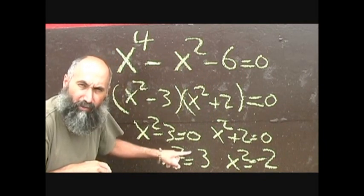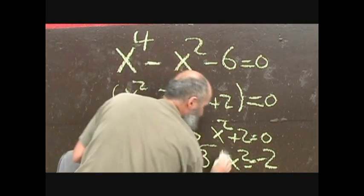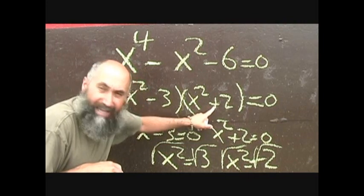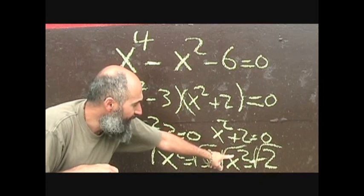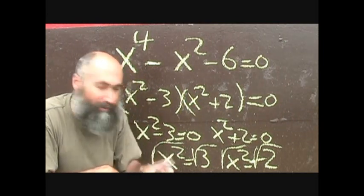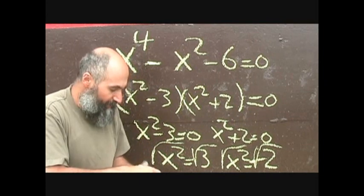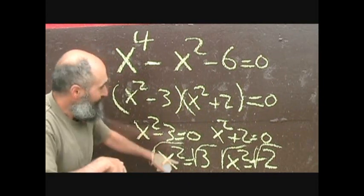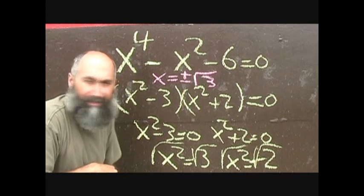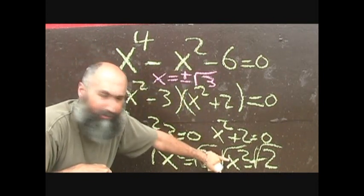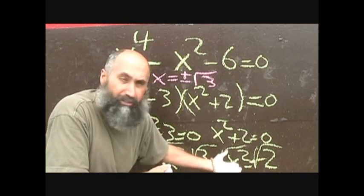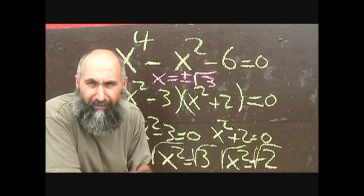To get x by itself, you take the square root of both sides. Over here, we have no answer because we're taking the square root of a negative number, so this branch gives no real solutions. On the other side, the square root of x squared is just x, and the square root of 3 gives two solutions: x equals positive square root of 3 and negative square root of 3, so x equals plus or minus root 3. The square root of a negative does have answers — they're called complex or imaginary numbers — but we're not dealing with those right now.